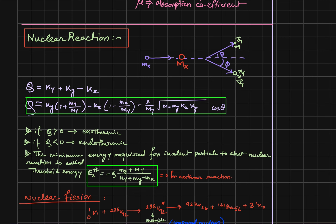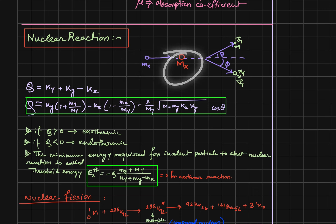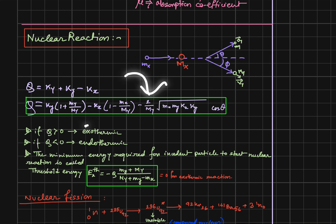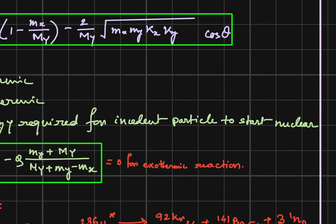For nuclear reactions, a small particle m_x is bombarded on target M_X, and two fragments are produced with masses M_Y and m_y. The Q value is the kinetic energy difference between products and reactants, and it equals the mass difference. If Q > 0, the reaction is exothermic; if Q < 0, it is endothermic. The threshold energy is the minimum energy required for the reaction. For exothermic reactions, the threshold energy is zero because they are spontaneous.